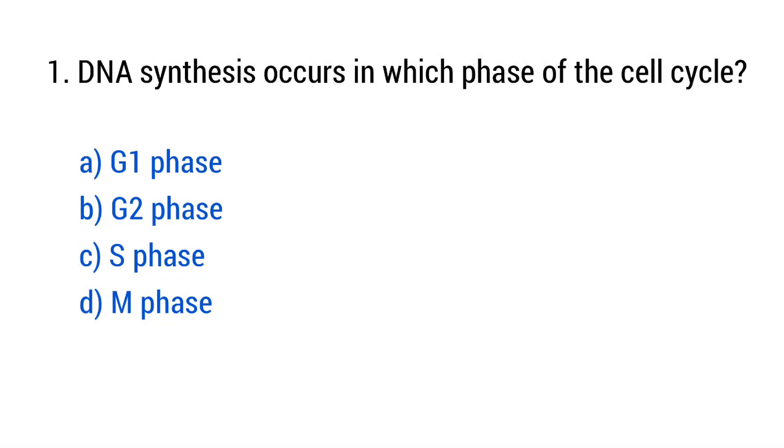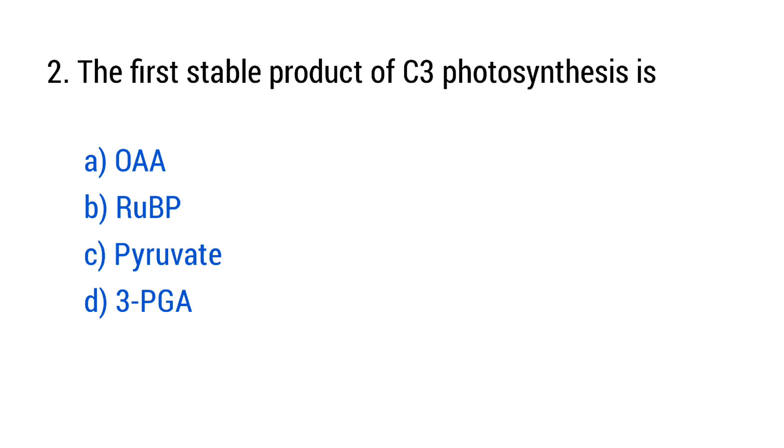Question number 1. DNA synthesis occurs in which phase of the cell cycle? The right answer is option C, S phase. Question number 2. The first stable product of C3 photosynthesis is? The right answer is option D, 3-PGA.